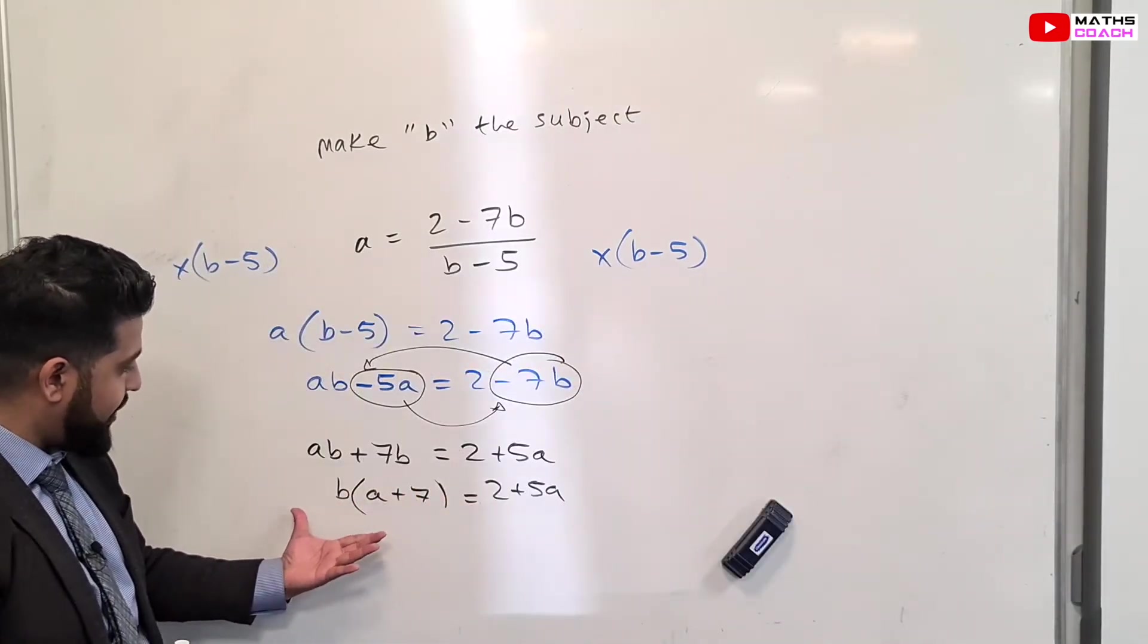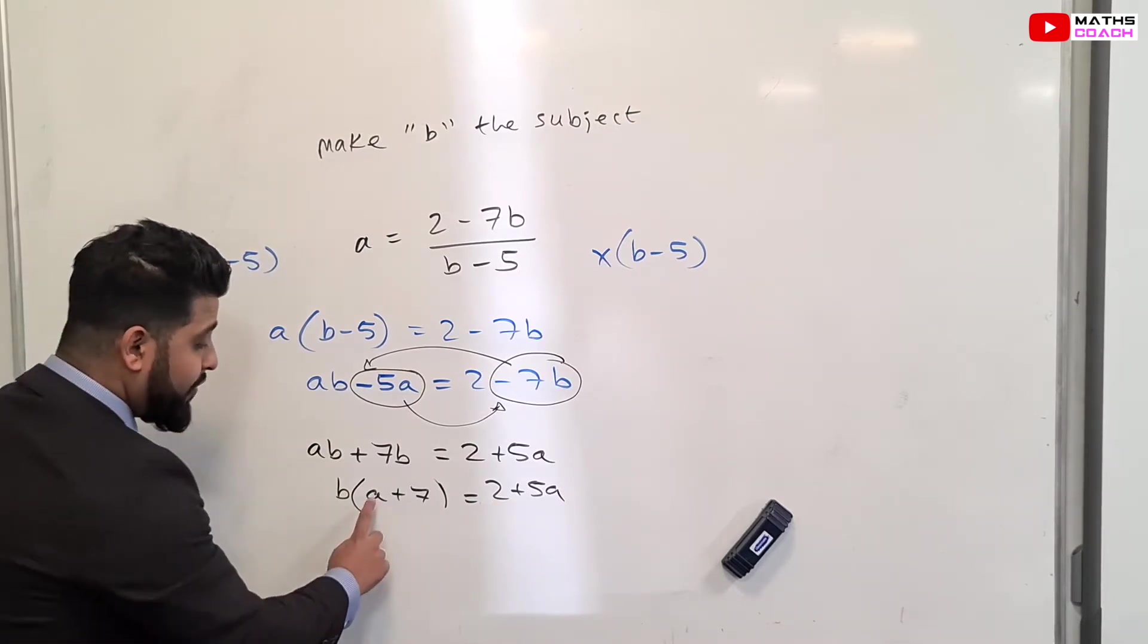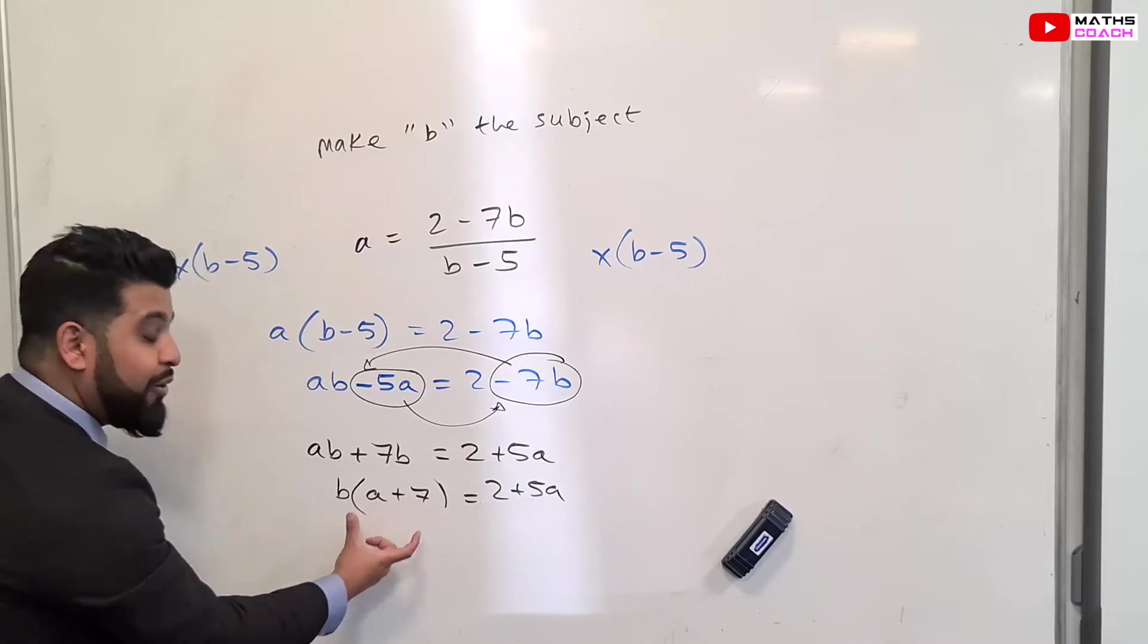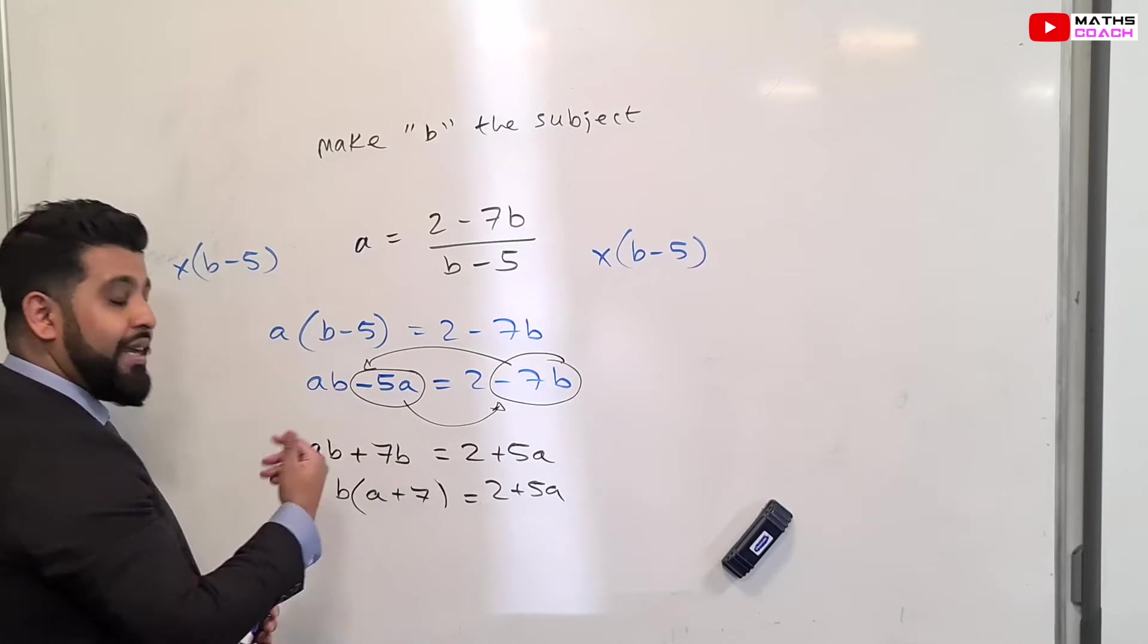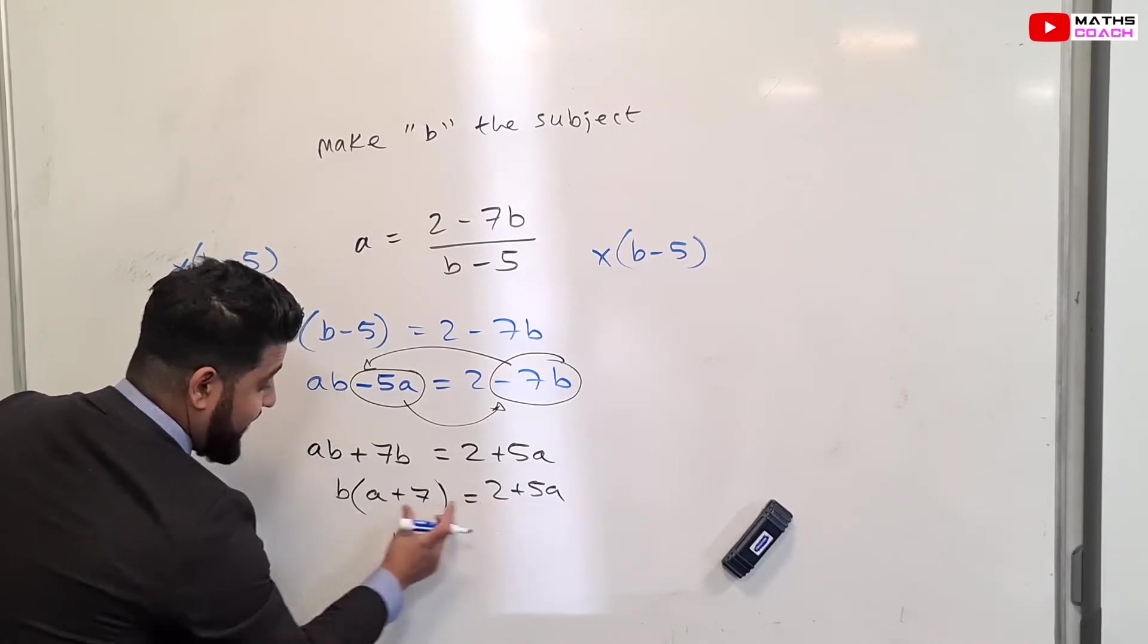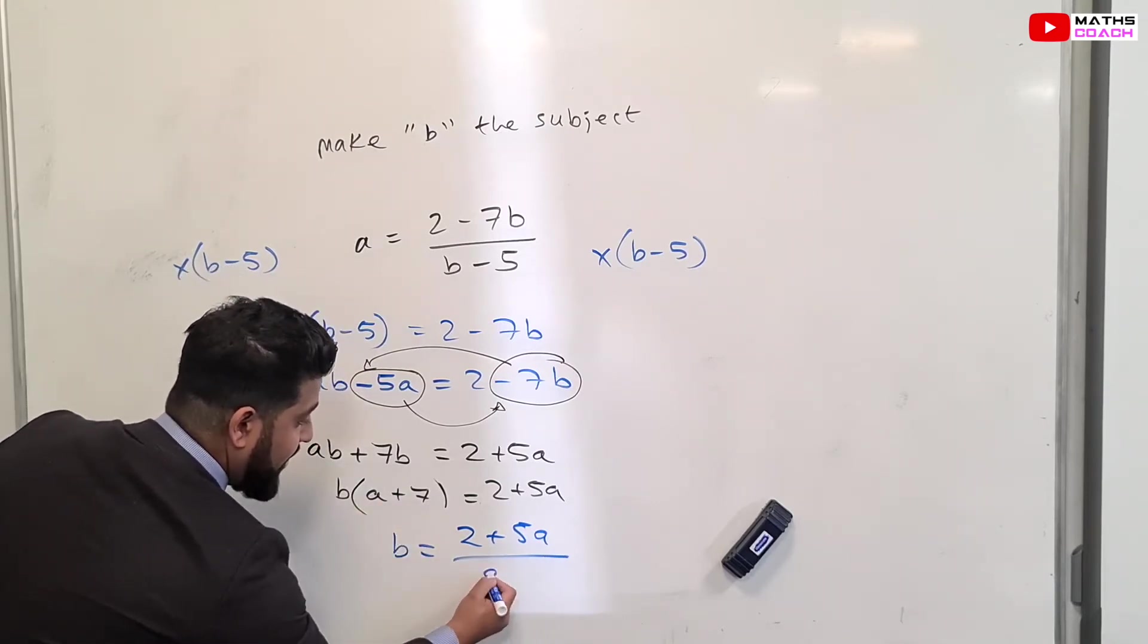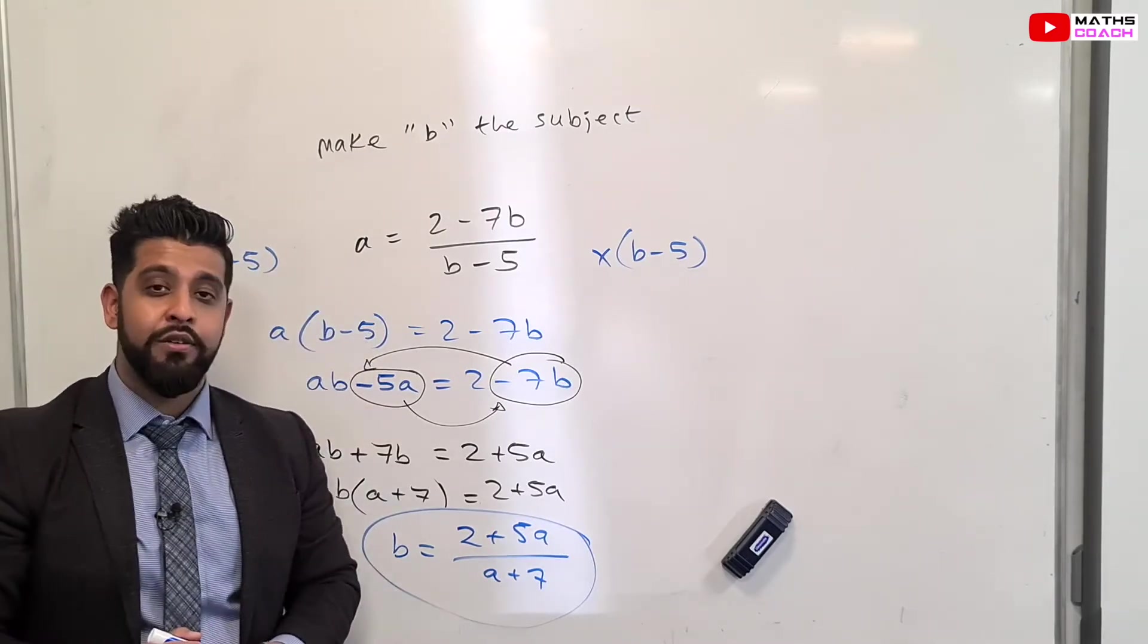Next, I will factorize the B out because I want B on its own. So I have B bracket A plus 7 equals 2 plus 5A. Right, so we are now at this stage here. So we have B bracket A plus 7 equals 2 plus 5A. We want to get rid of this A plus 7, the bracket here. Treat this as one thing, as one component. So B times this bracket. I want to get rid of this bracket which is multiplying my B. So I will divide by this bracket. I will divide both sides by this bracket. So I end up with B is equal to 2 plus 5A divided by A plus 7. And there we have B, the subject of our formula.